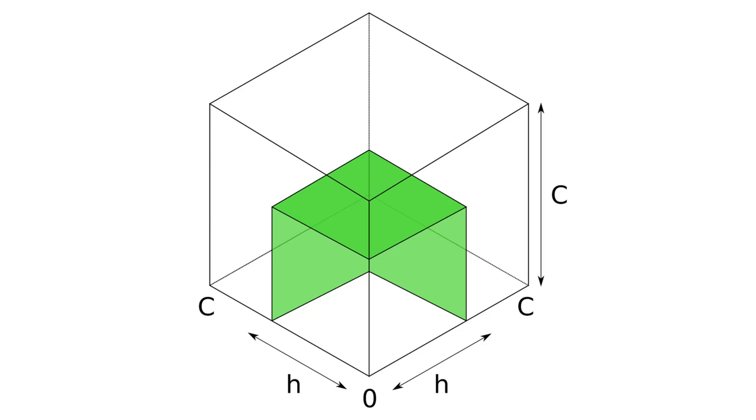So ultimately the attacker knows exactly how much a hop can forward, the value H, which correspond to this surface composed of three perpendicular squares. The attacker knows that the true balance is somewhere on this green surface.